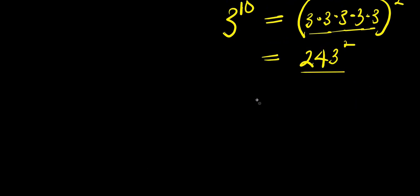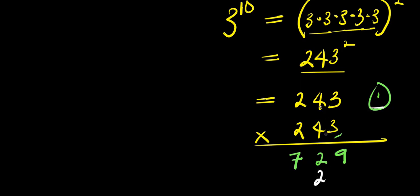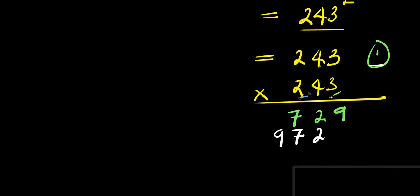To find the square of this, we have 243 times 243. I multiply out starting by using 3 to multiply everything: 3 times 3 is 9; 3 times 4 is 12, carry over 1; 3 times 2 is 6 plus 1 is 7. Then using 4: 4 times 3 is 12, carry over 1; 4 times 4 is 16 plus 1 is 17, carry over 1; 4 times 2 is 8 plus 1 is 9. Then using 2: 2 times 3 is 6; 2 times 4 is 8; 2 times 2 is 4.